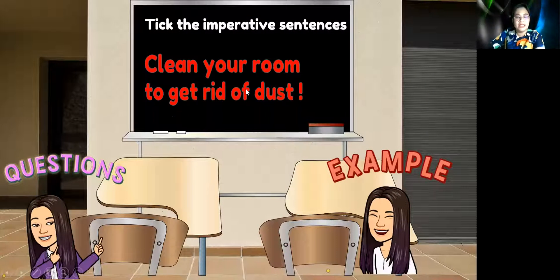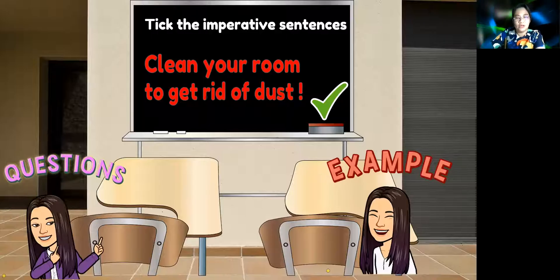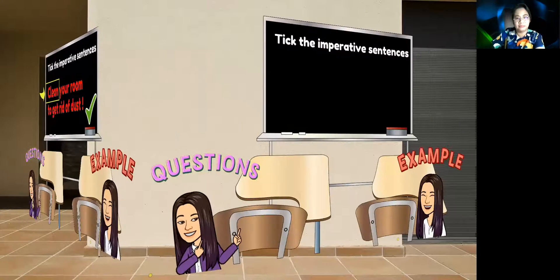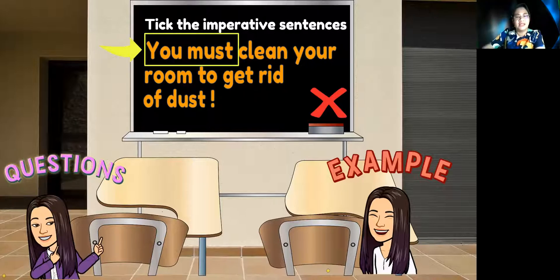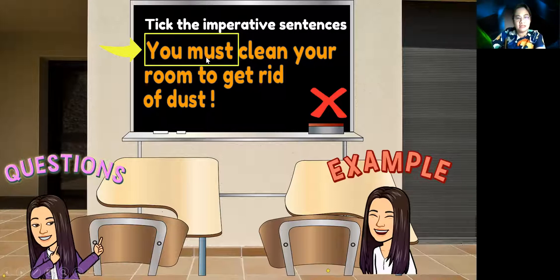Next: 'Clean your room to get rid of dust.' This is correct because 'clean' is a verb, so it's an imperative sentence. Next: 'You must clean your room to get rid of dust.' It's wrong because 'you must' is not a command — this is not an imperative sentence because it starts with 'you.'